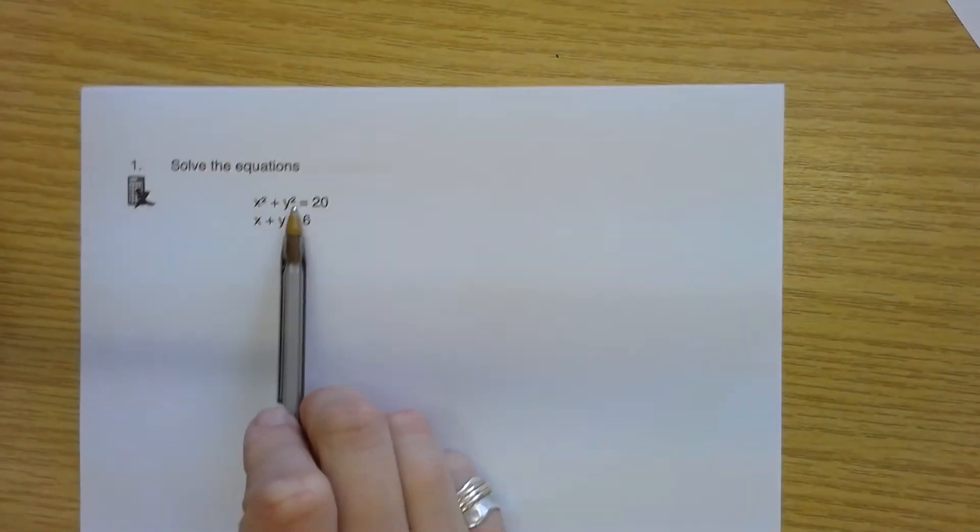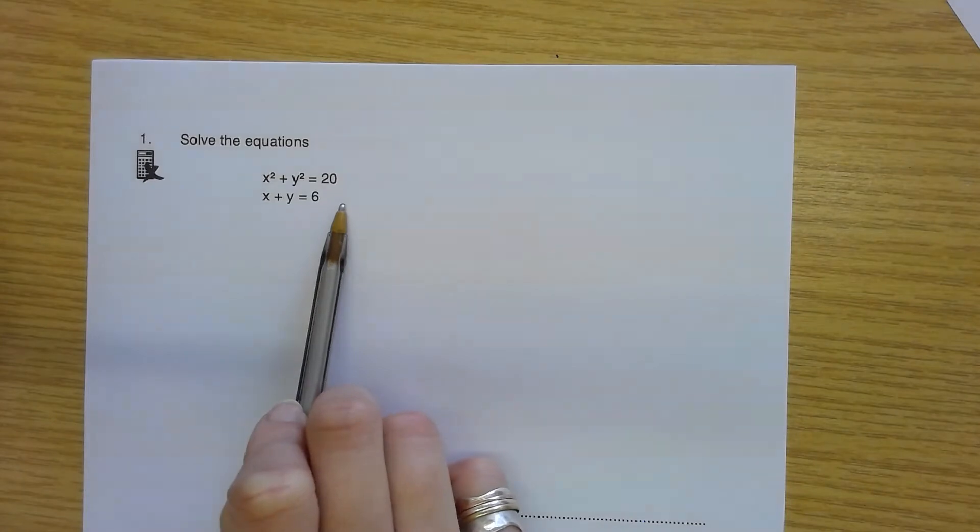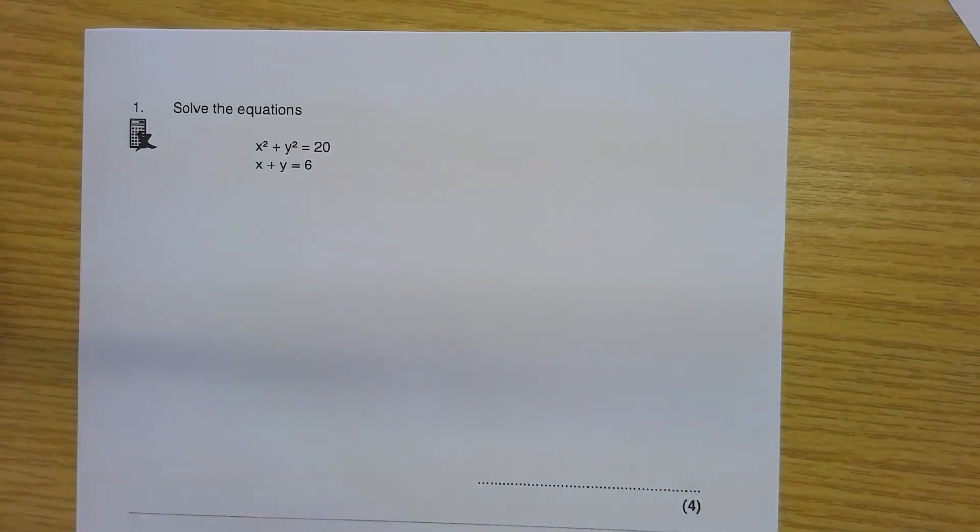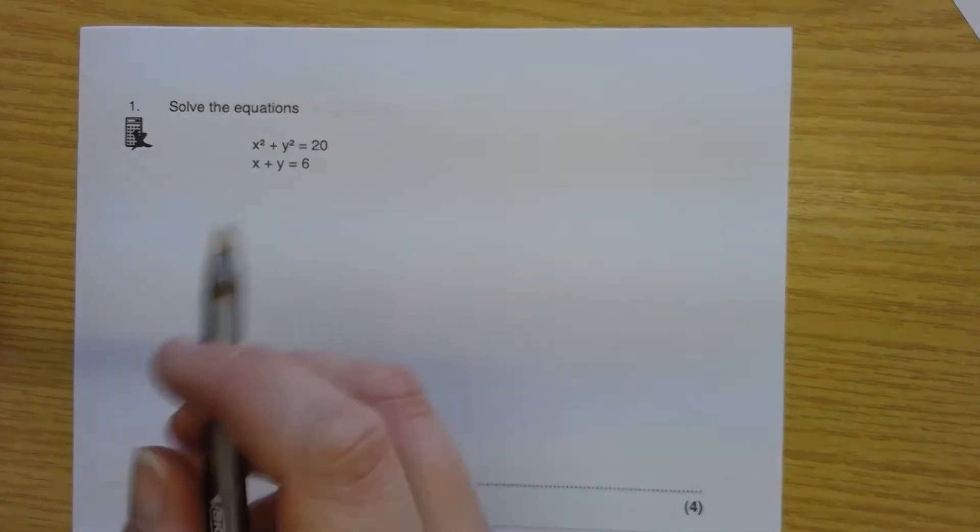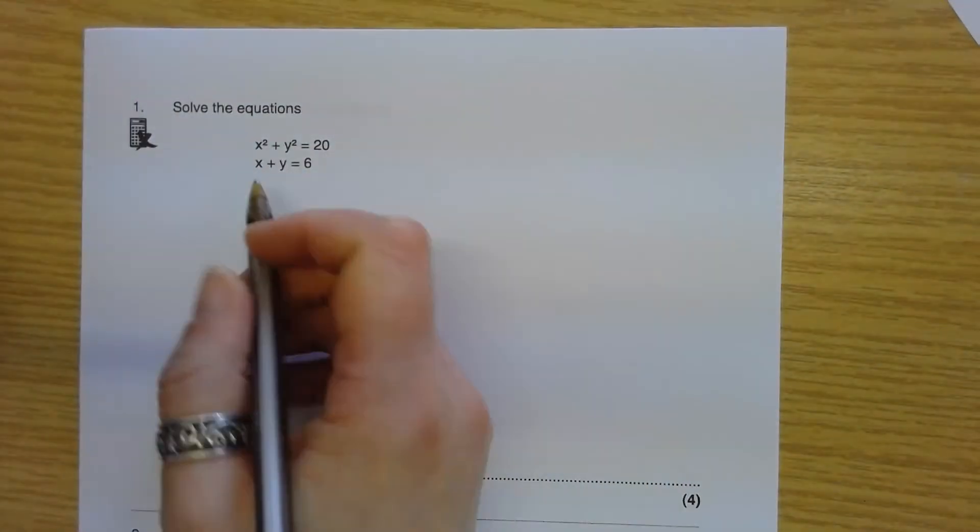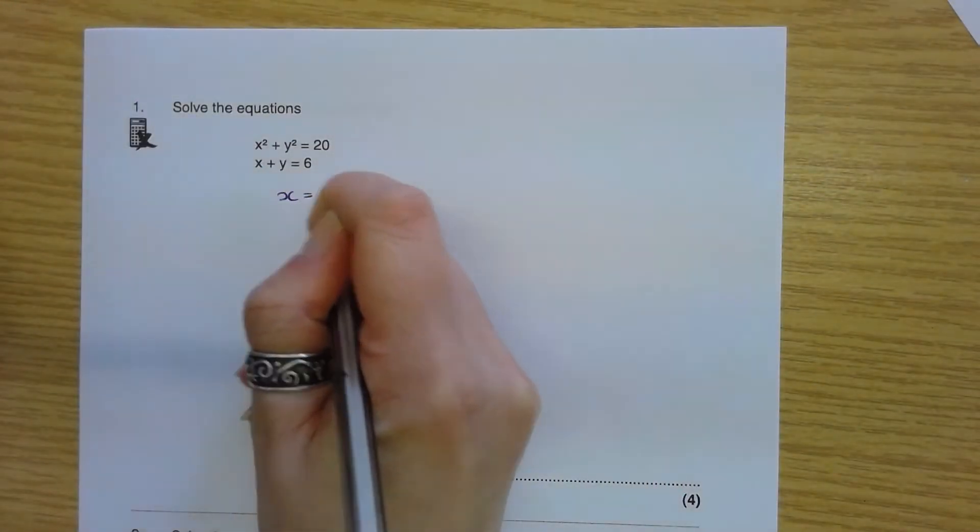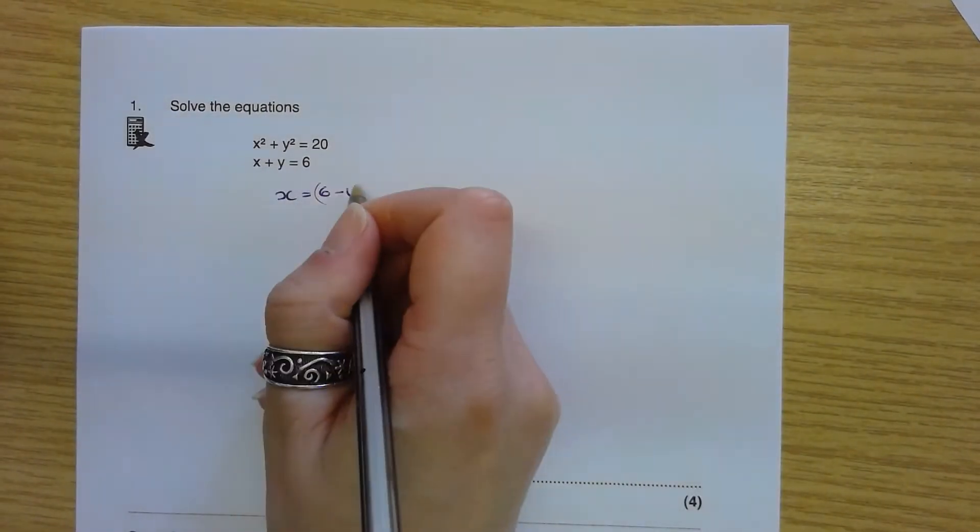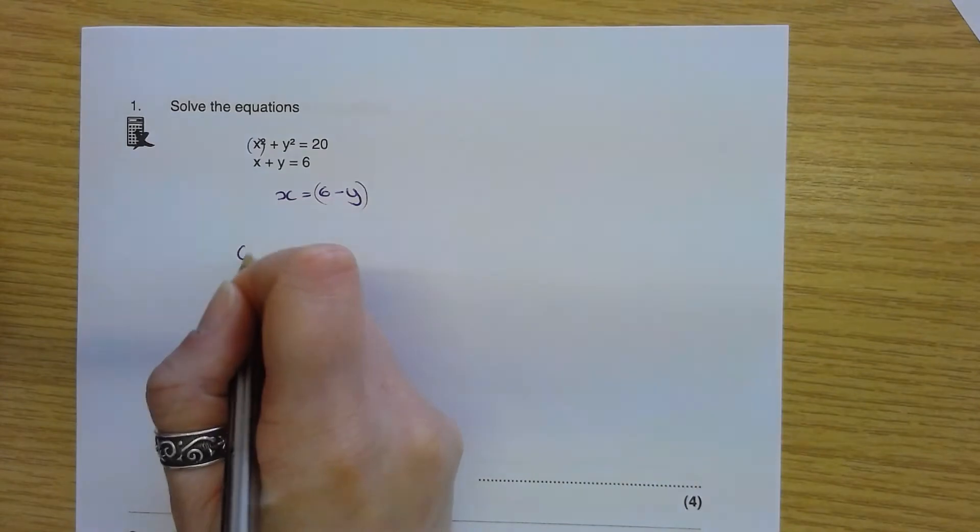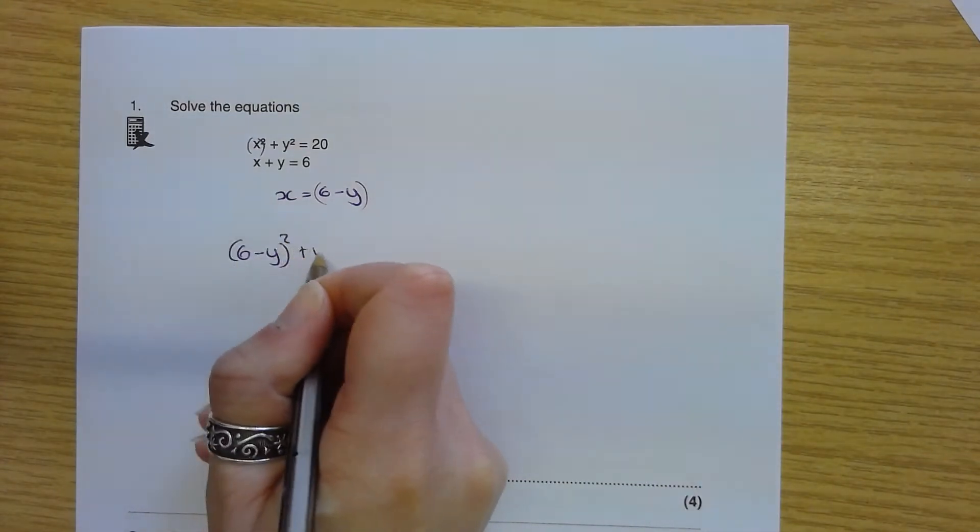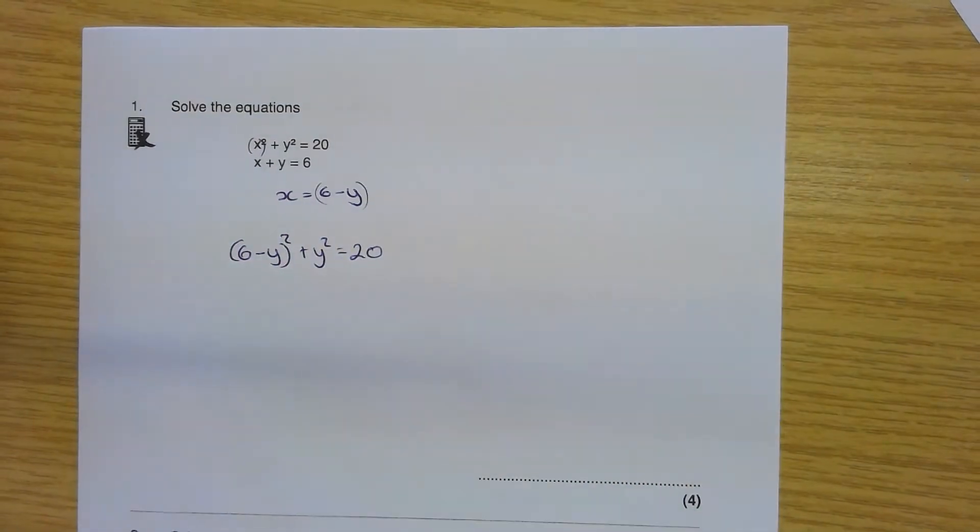First question, I've got my equation for a circle or my non-linear and my linear. Standard approach for this would be not to use elimination because they're not both linear, but to use the technique of substitution. I would say that x is 6 subtract y and then I would substitute 6 subtract y in for x to give me (6 - y)² + y² = 20. Now I have a single equation involving one unknown. I can put that in for solve N.